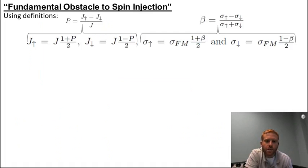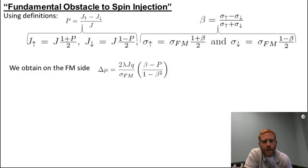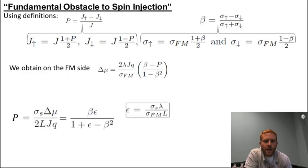Using the definitions of both the injected current polarization and the bulk ferromagnetic polarization, we can derive a simple expression for the splitting on the ferromagnet side. In intimate ohmic contact, the electrochemical potentials are continuous, so this is the same as a splitting on the semiconductor side. We can therefore substitute it into our previously derived expression to obtain this result.